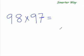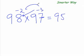The smarter way of multiplying 98 times 97 would be, watch me. That's your answer.